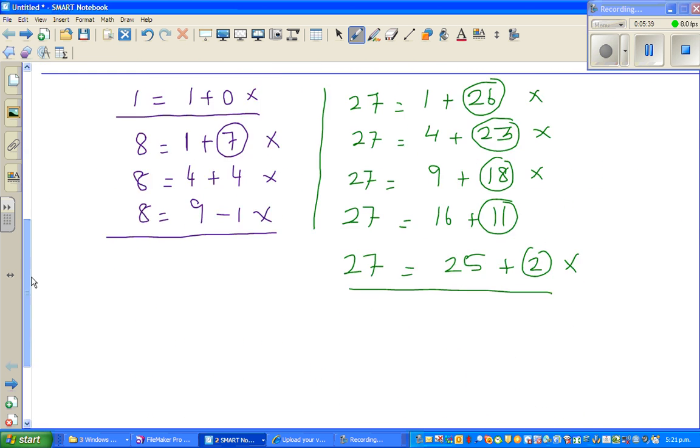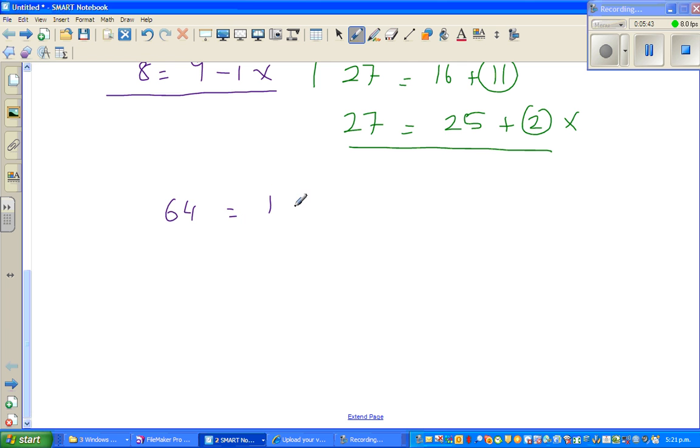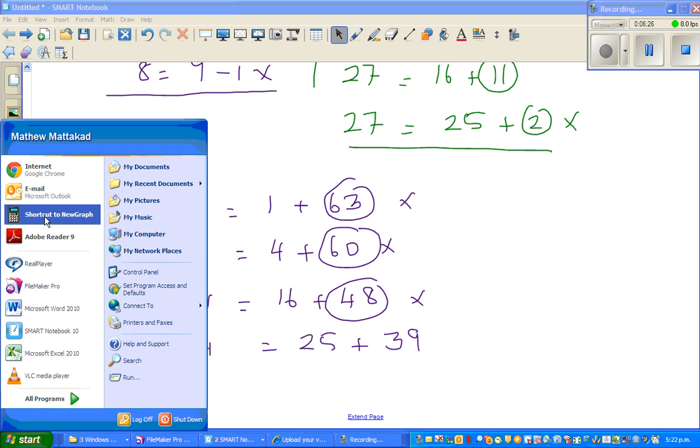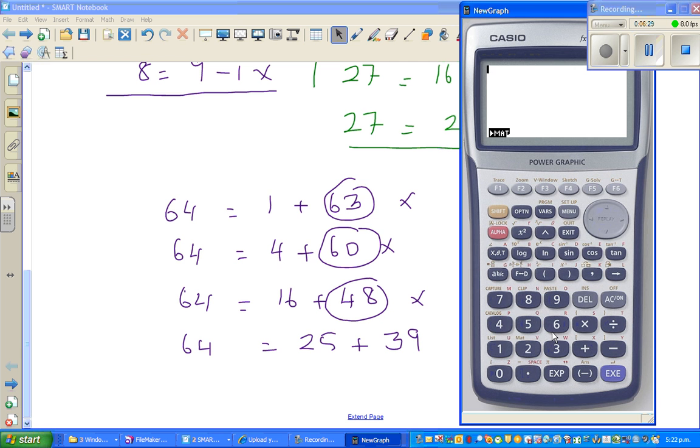64: start with 1 + 63, not working. 4 + 60, not right. 9 + 55, not right. 16 + 48, not right. 25 + 39? Let me use a calculator. 64 - 25 = 39, I was right.